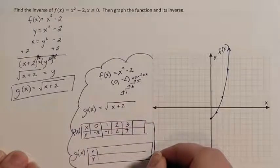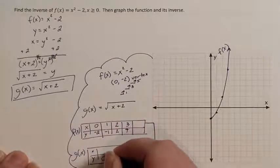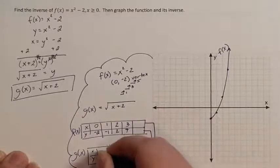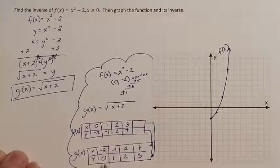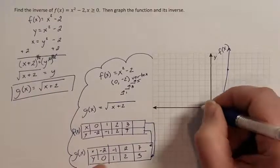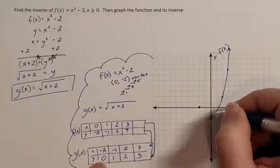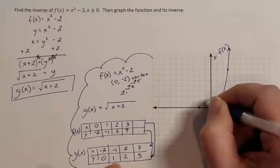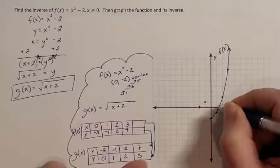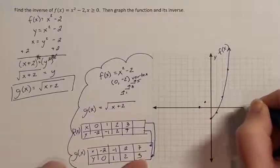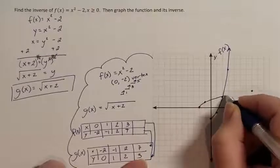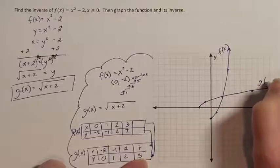And if it was a y, it is now an x. And these are the coordinate points that we're going to graph to graph this function. So I have negative 2, 0, negative 1, 1, 2, 2, and 7, 3. So this is my g of x function.